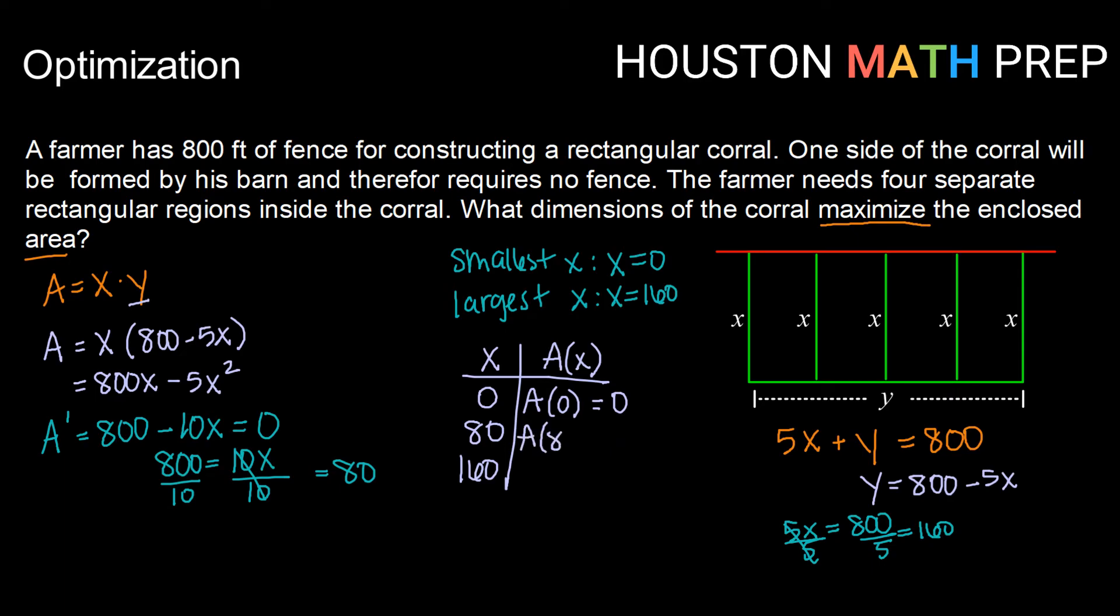So A of 0 would give us an area of 0. A of 80, again I'm just plugging this back into this area formula would give me an area of 32,000 square feet. And an A of 160 would also yield 0 as the area. So there's a pretty clear maximum here that occurs when x is equal to 80 feet.